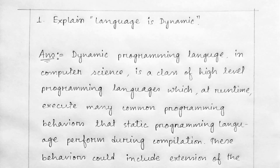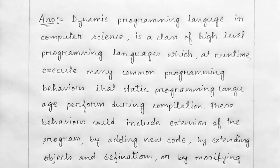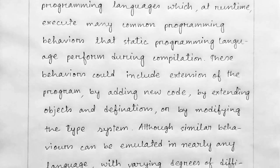A dynamic language in computer science is a class of high-level programming language which at runtime executes many common programming behaviors that static programming languages perform during compilation. This behavior could include extension of the program by adding new code.